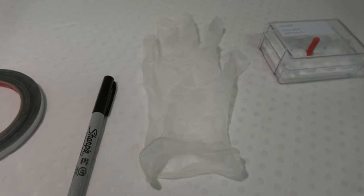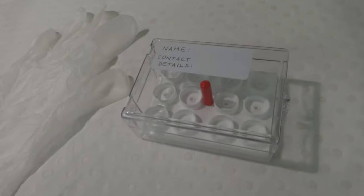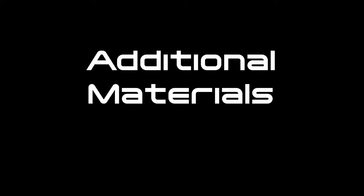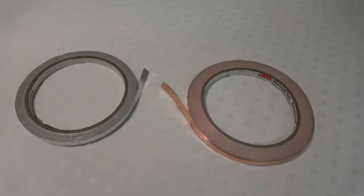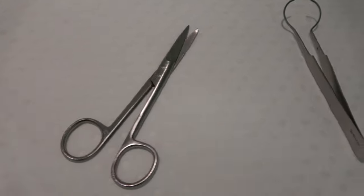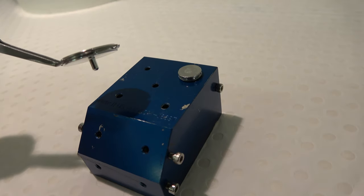And a SEM sample storage box. Additional materials you may find useful include tweezers or forceps, single-sided conductive tape, scissors, a stub lifter, and a pin stub holder.